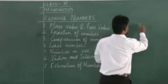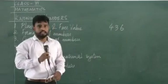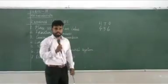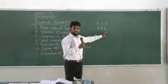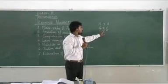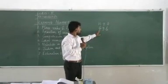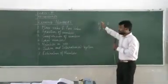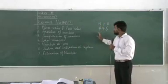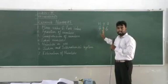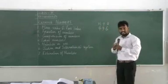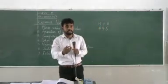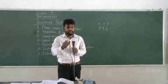if we have 436 — here 6 is in the ones place, 3 is in the tens place, and 4 is in the hundreds place. So the place value of 4, since it is in the hundreds place, is 400. The place value of 3 is 30. And the place value of 6 is 6. So you can understand that the place value of a digit is the position it acquires in that number or in that place value chart.